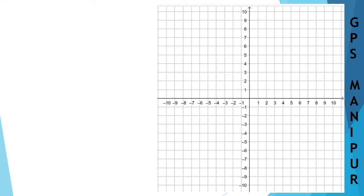We are doing exercise 4.1, question number 3, problem number 2. Let me write down the question. The question is: 2x minus y is equal to 2, and 3x plus 2y is equal to 17. Now, solution.